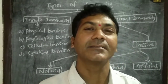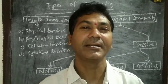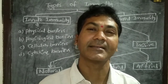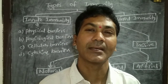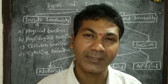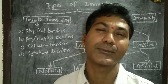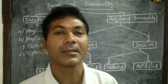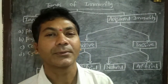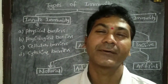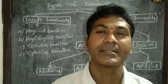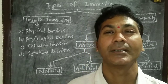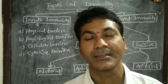Every organism has an ability to resist diseases. This disease resistance power is known as immunity. Based on the nature of response, immunity is divided into two types.